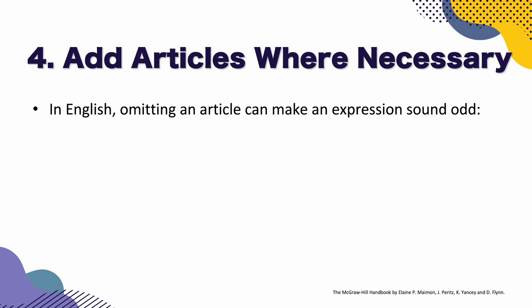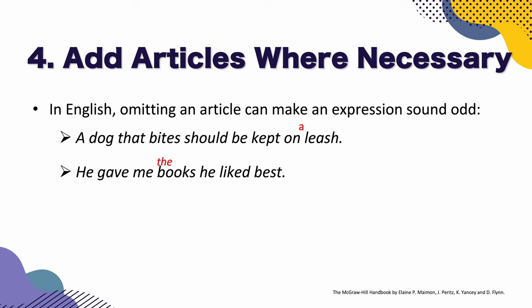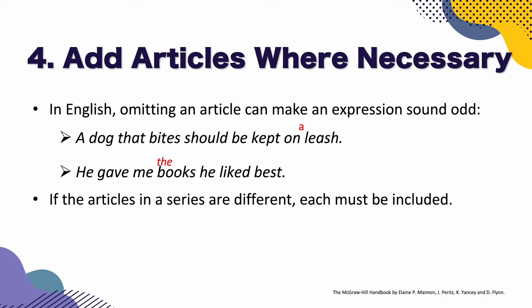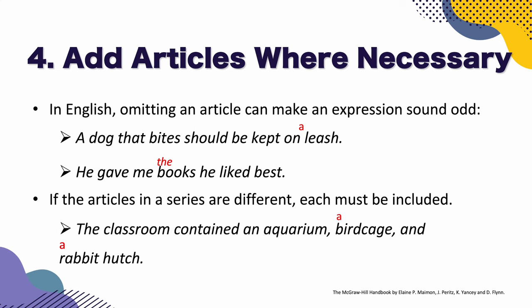Now let's go to the fourth point: add articles where necessary. In English, omitting an article can make an expression sound odd. For example: 'A dog that bites should be kept on leash' — it's better to add the article: 'A dog that bites should be kept on a leash.' Or: 'He gave me books he liked best' — 'He gave me the books he liked best' is more specific. If the articles in a series are different, each must be included. For example: 'The classroom contains an aquarium, birdcage, and rabbit hutch' — you need to add the articles: 'The classroom contains an aquarium, a birdcage, and a rabbit hutch.'